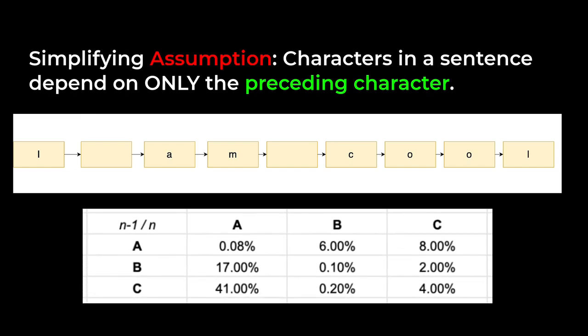And so we can represent this as a conditional probability table. What this table shows is that if we have the previous character generated as A, then we'll have a greater chance of generating B and C than generating another A.